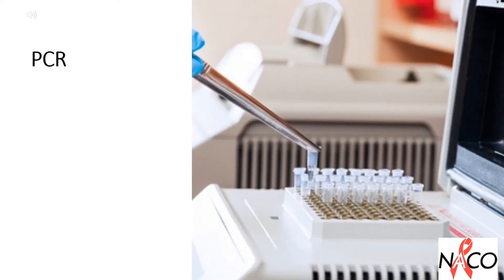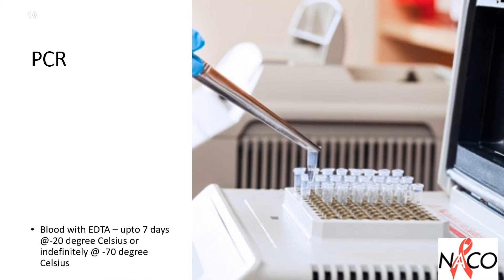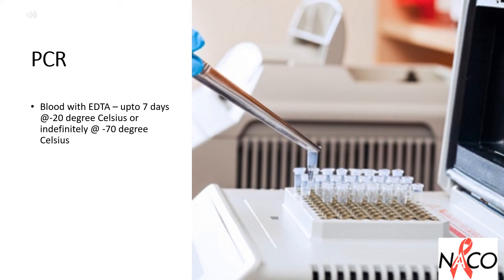Section Polymerase Chain Reaction (PCR): Blood with EDTA should be kept up to 7 days at minus 20 degrees Celsius, or indefinitely at minus 70 degrees Celsius. RT-PCR specimens: The extracted RNA should be kept indefinitely at minus 70 degrees Celsius.